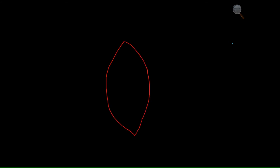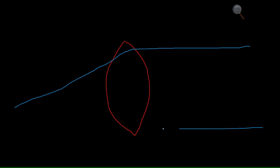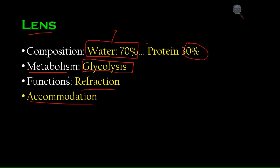The functions of the lens are refraction and accommodation. Refraction is the bending of light when it passes from one medium to another. The cornea and the lens both refract light for the purpose of focusing it on the retina.